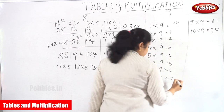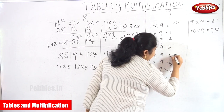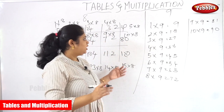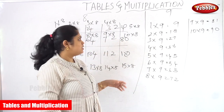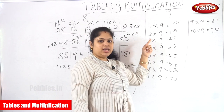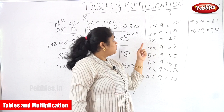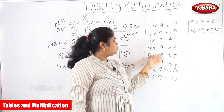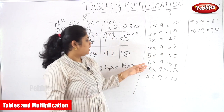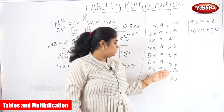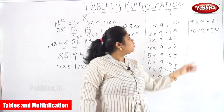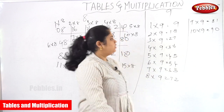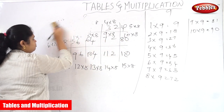From here, we use backward counting for the second digit, starting from 0: 0, 1, 2, 3, 4, 5, 6, 7, 8. So the second digit is a backward count. Now you can get the ninth table: 1 into 9 is 9, 2 into 9 is 18, 3 into 9 is 27, 4 into 9 is 36, 5 into 9 is 45, 6 into 9 is 54, 7 into 9 is 63, 8 into 9 is 72, 9 into 9 is 81, 10 into 9 is 90.